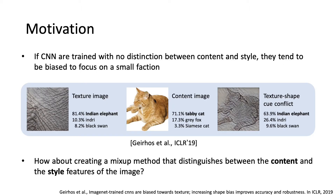I will explain the motivation for our study. It has been studied that a convolutional neural network is biased in a small fraction when it is not able to distinguish pictures of content and style. For example, a lion image is recognized as an elephant when recognized only by the texture. We felt the necessity for a mix-up based data augmentation that separates the content and style information.